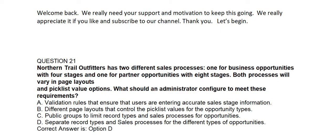Question number twenty-one. Northern Trail Outfitters has two different sales processes: one for business opportunities with four stages and one for partner opportunities with eight stages. Both processes will vary in page layouts and picklist value options. What should an administrator configure to meet these requirements? Option A: Validation rule. Option B: Different page layouts that control picklist values. Option C: Public group to limit record types and sales processes. Option D: Separate record types and sales processes for the different types of opportunities.